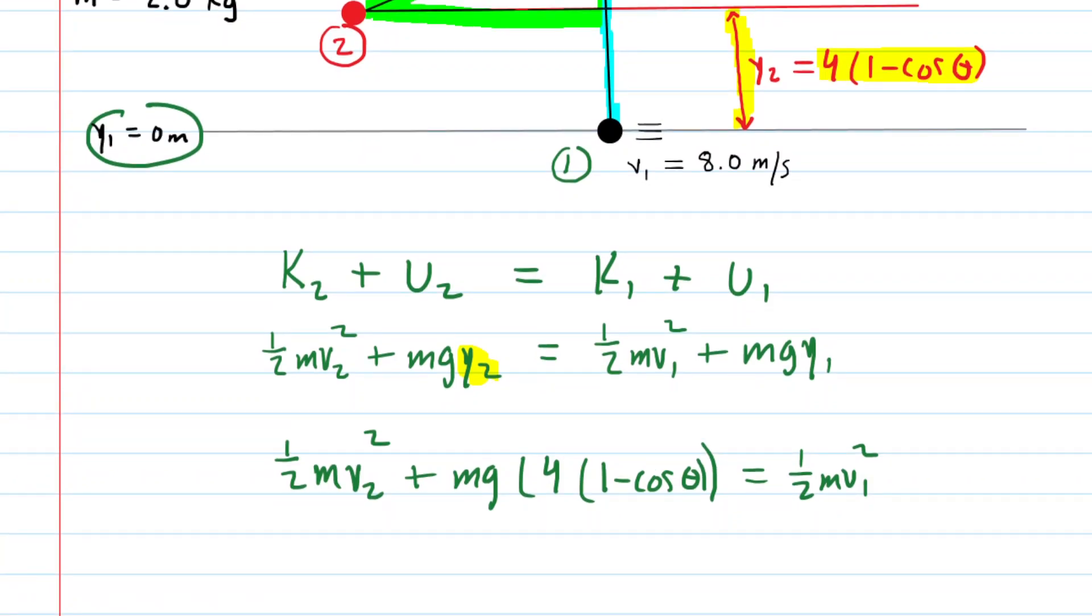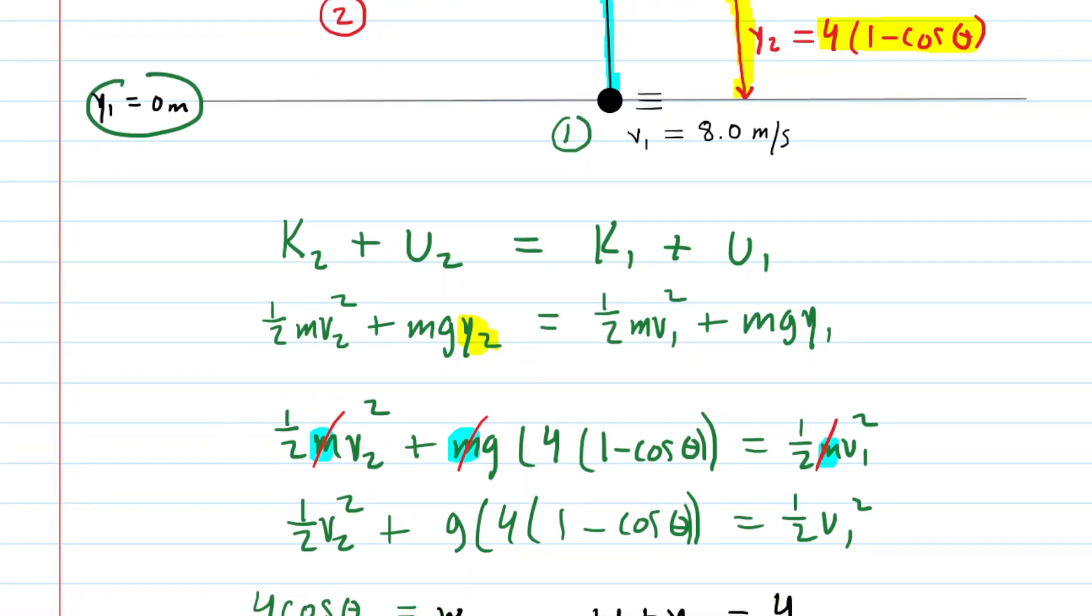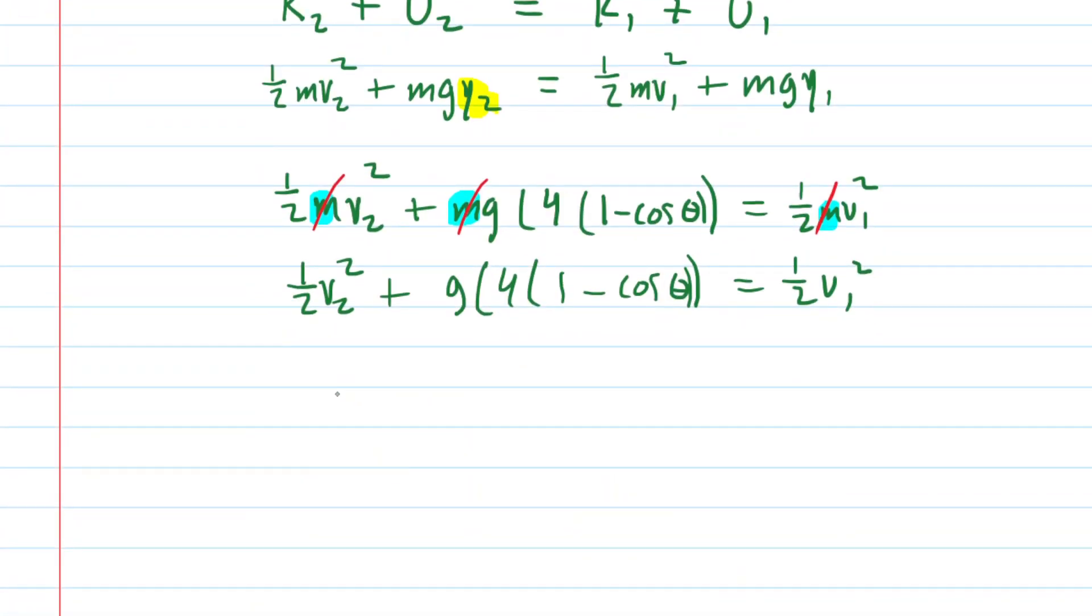And then keep simplifying, because you have the mass appearing in all three of the remaining terms. We can cancel out that mass by basically dividing each term by m. And perhaps at this stage, we can begin to plug in all of these known values. We don't know v2. That's actually what we're looking for. But g, of course, is 9.8 meters per second squared. We will omit units for clarity times 4 times 1 minus cos theta, which was given to us as 60 degrees for this part of the question. And then on the other side, we have 0.5 times the speed initial squared. That initial speed was 8 meters per second. We'll square that.